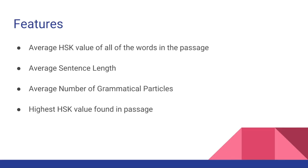Now with these bags of words, the most telling features I could find regarding difficulty were the following: average HSK value of all the words in the passage — HSK referring to the official Chinese fluency test, so the HSK value is based on how advanced the test thinks these words are. Next, average sentence length in characters. Then, average number of grammatical particles based on collections compiled from various lists of Chinese grammar words. And lastly, the highest HSK value found in the passage.